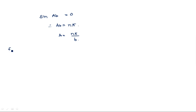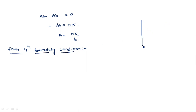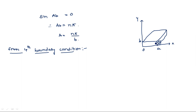Now take the fourth boundary condition. Looking at the rectangular waveguide again — breadth is along the x-axis from 0 to a, and height is up to b. The right-side boundary is the fourth boundary condition. At this boundary, y is varying while x is constant at x = a. So the electric field along the y-direction, Ey = 0, at x = a, for all y varying from 0 to b.